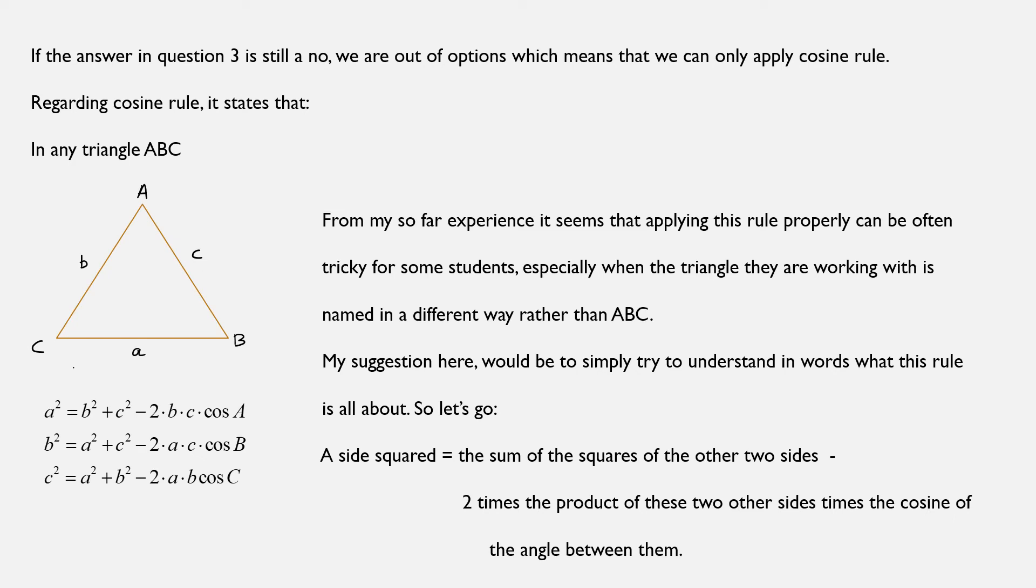A side squared, or in other words, the square of any side, is equal to the sum of the squares of the other two sides minus two times the product of these two other sides multiplied times the cosine of the angle between those two.